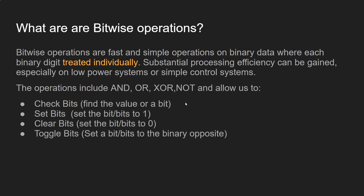For instance, we can check a bit to see what its value is — whether it's a 1 or a 0. We can set an individual bit or multiple bits to 1. We can clear bits, which means set a bit to 0. We can also toggle individual bits, so if it is a 1 it will go to a 0, and if it's a 0 it will go to a 1.